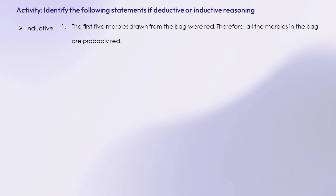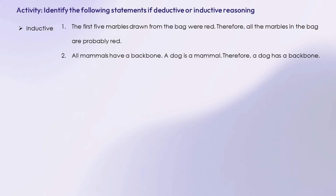Answer: inductive reasoning. Number 2: all mammals have a backbone. A dog is a mammal. Therefore, a dog has a backbone. Answer: deductive reasoning.